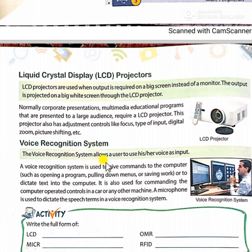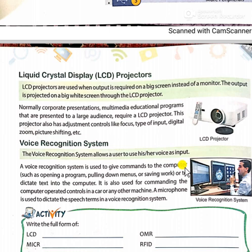The next device is the voice recognition system. It is a kind of microphone device that allows a user to give input through their voice — instead of using a keyboard or mouse, your voice is treated as input. For example, on your cell phone when you search using the microphone on Google, you click the icon and speak, and your voice is entered as input — that system is the voice recognition system.